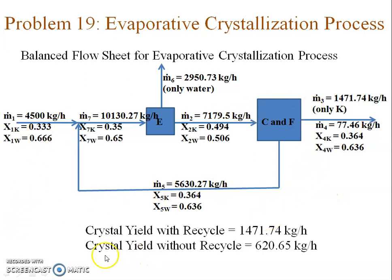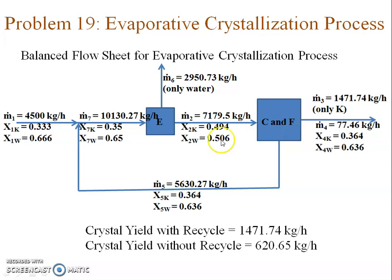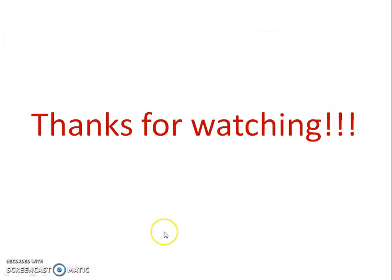This is the balanced flow sheet for the evaporative crystallization process with recycle. The crystal yield with recycle has gone up drastically compared to without recycle — suggesting the recycle was a very good idea. However, the engineer may have forgotten something about the design specifications of the evaporator, crystallizer, and filter unit. If you have any idea what the engineer is missing and what else should have been suggested to the manufacturer, please leave a comment. Thanks for watching — please interact and leave comments so I can make more such videos.